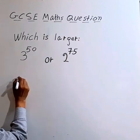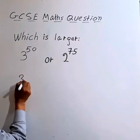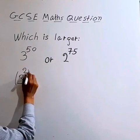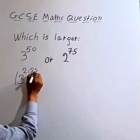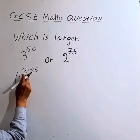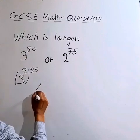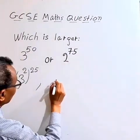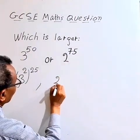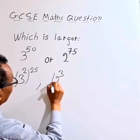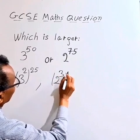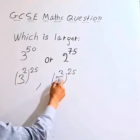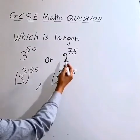So 3 to the power of 50 is 3 to the power of 2 times 25 — since 2 times 25 is 50. And 2 to the power of 75 is 2 to the power of 3 times 25 — since 3 times 25 is 75.